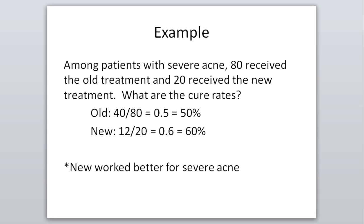Looking at severe acne, we had 80 people that got the old treatment and 20 people that got the new treatment. With the old treatment, 40 out of 80 were cured — so 50 percent — and with the new treatment, 12 out of 20 were cured — so 60 percent. So again, the new treatment works better with severe acne. The company could take this data and say that on both mild acne and severe acne, their new treatment performs better than the old treatment, because in both cases the new did have a higher cure rate.